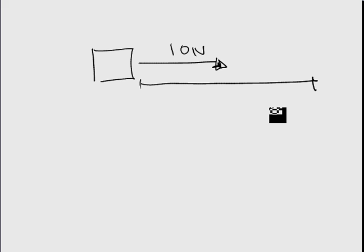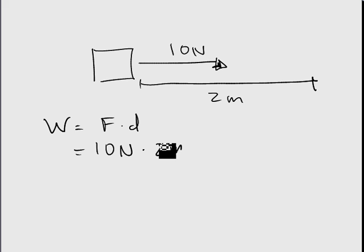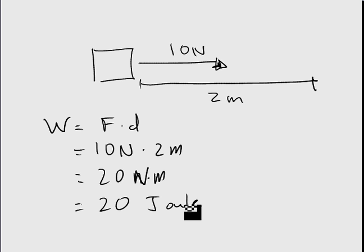So let's just do a simple calculation. If we're pushing a box with a force of 10 newtons, and we push that box for 2 meters, then we just plug it right into our equation, force times distance. Are they in the same direction? Yes, so it's going to be positive. So you're going to get 10 newtons times 2 meters, and it's going to give you 20 newton-meters. Well, a newton-meter is equal to a joule. And a joule is the standard unit for work. So a newton-meter is a joule, and we can write that just as a capital J.